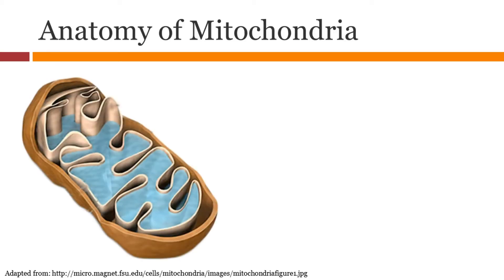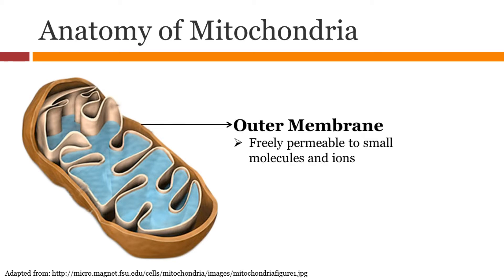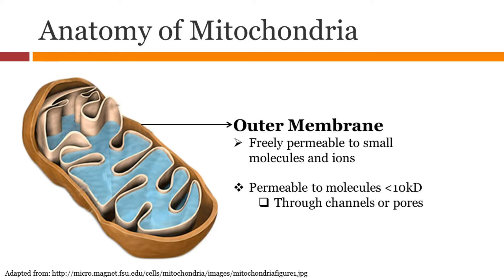Here is an example of mitochondria. The outer membrane surrounds the entire mitochondria. It is freely permeable to small molecules and ions — more specifically, to molecules less than 10 kD. Charged ions diffuse through channels or pores.